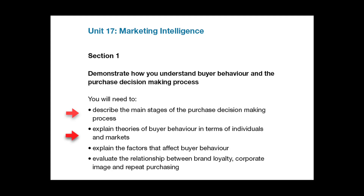Bullet point 2 is looking at buyer behaviour. There are several models of buyer behaviour you can look at, and you could think about developing your own model based on one of the established theories as a starting point. You might also want to consider if buyer behaviour has changed or is changing with the much greater access to product information and product recommendations made possible by the internet. The reference to markets is really asking you to consider how buyer behaviour may change for different types of product.